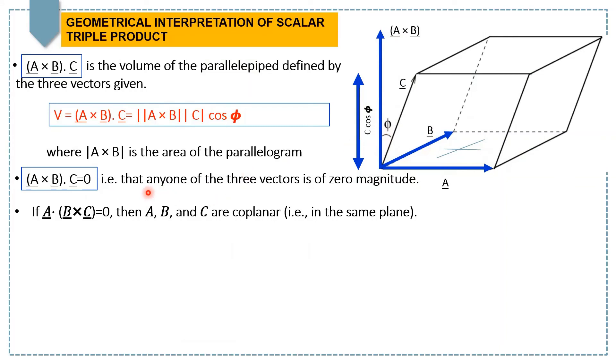Now, if any one of the three vectors is of zero magnitude, then we will get A cross B dot C equal to zero. And if all of the three vectors are coplanar, meaning all three vectors are in the same plane, in that case we will also get A dot B cross C equal to zero. So it means that in that case, the parallelepiped defined by the vectors A, B, and C would be flat and has no volume.